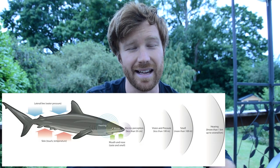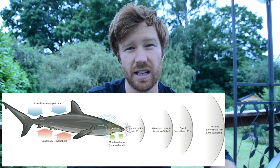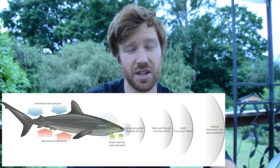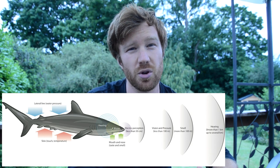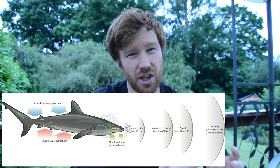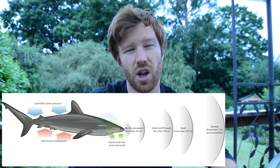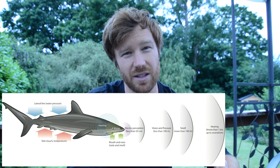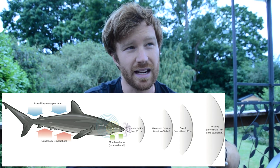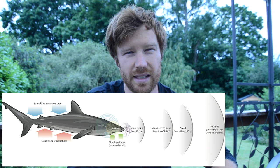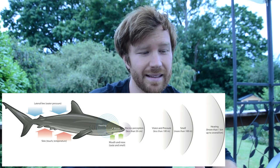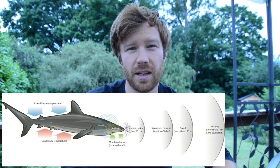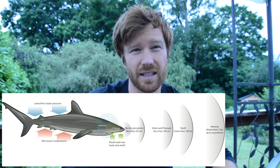Do sharks have vision? Yes, they can see, and they actually have extremely good vision in the ocean, particularly in low light conditions. This is because they can actually adjust the size of their pupil, which most other fish can't. This adjustment allows a lot more light into their eyes, meaning they can see very well in low light or almost no light conditions. Their smell is also very useful and very important — they can smell very minute amounts of fish blood across quite large areas.